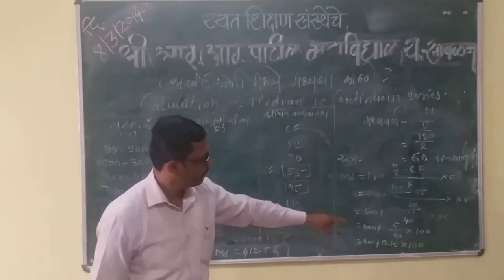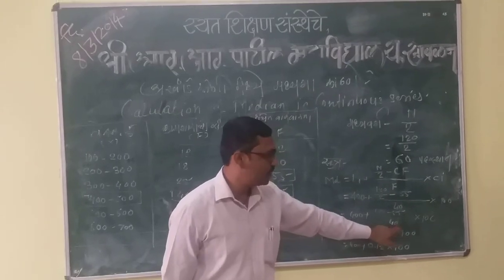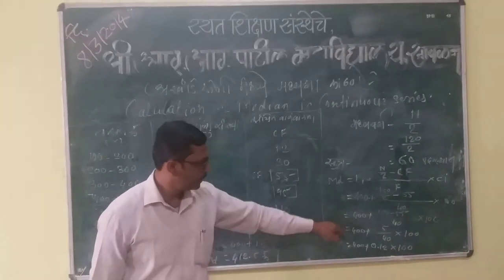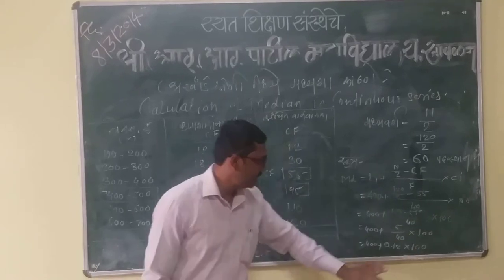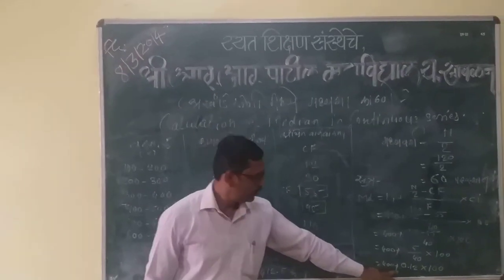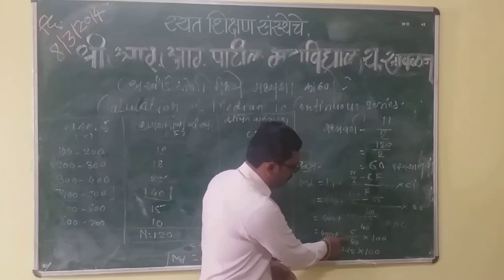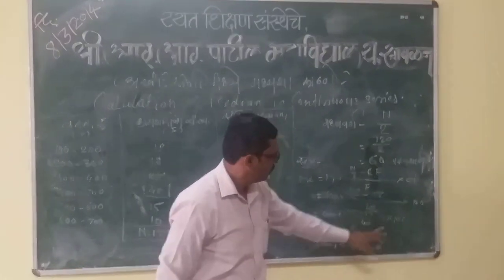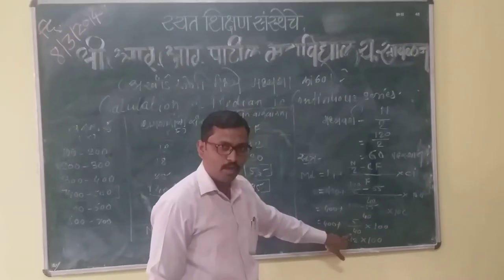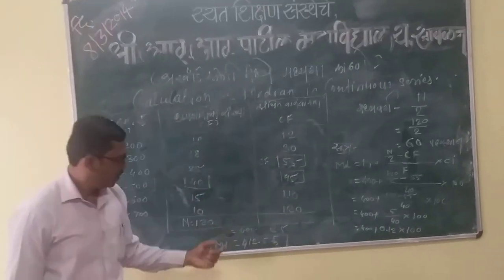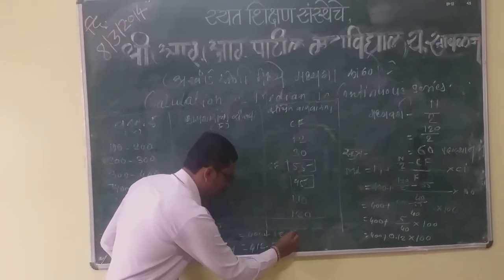We calculate: 400 plus (60 minus 55) divided by 40, into 100. That gives us 400 plus 5 divided by 40, into 100. Then 400 plus 0.125 into 100, or equivalently 5 into 100 divided by 40, which equals 400 plus 12.5.